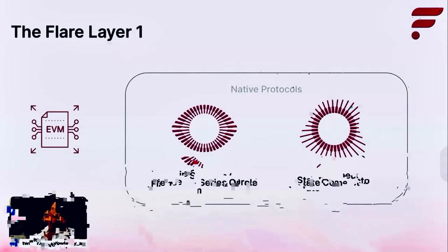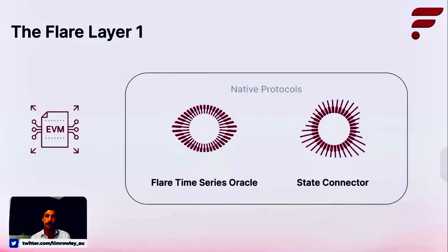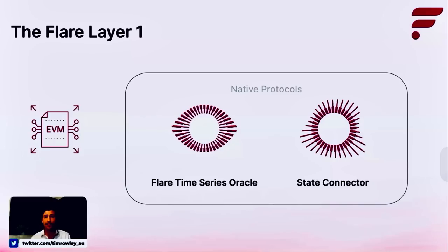Currently, this includes digital asset price pairs. The second protocol is the State Connector, which acquires information from other blockchains and the internet. This data can then be used securely, scalably, and trustlessly with smart contracts on Flare. Together, these protocols allow developers to create an ecosystem of robust and decentralized interoperable applications, connecting everything.